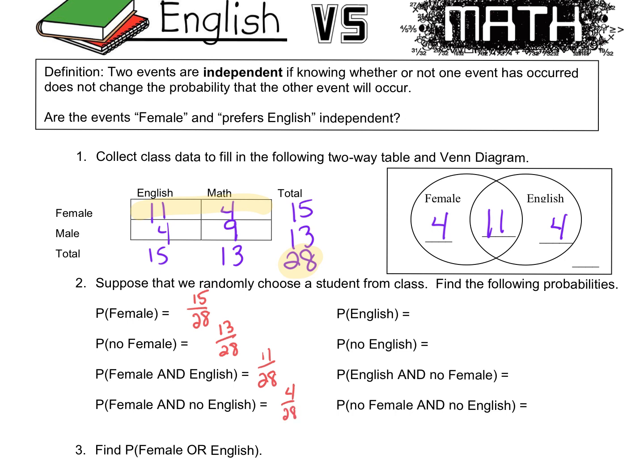So you see, when you get it in the two-way table, it's a lot easier to answer these questions. Probability of people just liking English would be this row total, so that would be 15 out of 28 again. And probability of no English — preference math — that would be 13 out of 28. English and no female, that would be 4 out of 28. You could reduce 4/28 to 1/7 if you wanted, but 4/28 is fine.